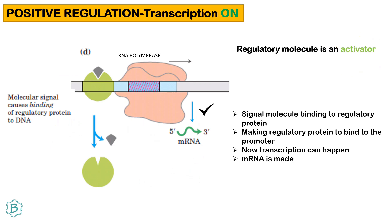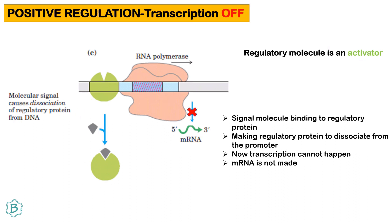In the case of positive regulation with transcription ON: the regulatory molecule is an activator. When the signal molecule binds to the regulatory protein, it causes the regulatory protein to bind to the promoter, activating transcription so mRNA is made. For positive regulation with transcription OFF: the signal molecule causes the regulatory protein to dissociate from the promoter, so transcription cannot happen and mRNA is not made.